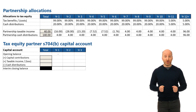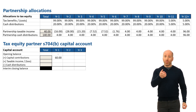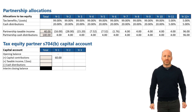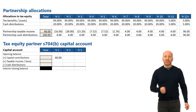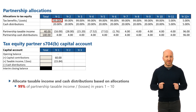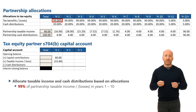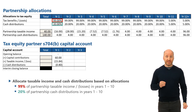Their account starts with an opening balance of zero, and we'll assume for now that they invest 60% of the cost of that project, or $60 million of the total $100 million capital cost in year one. Allocated to them will be 99% of the taxable income or losses, which is 99% times the $16 million in partnership loss, equaling $15.84 million. And then they'll take 20% of the cash distributions, which will reduce their capital account balance, leaving the closing balance at $43.36 million at the end of year one.